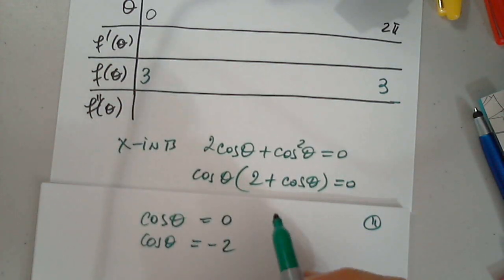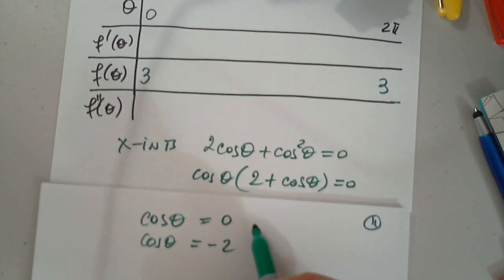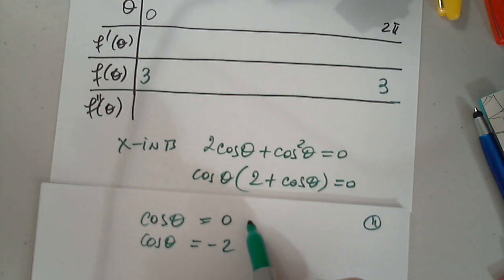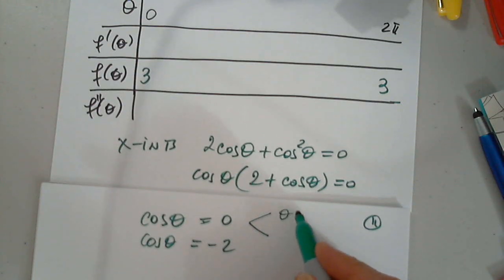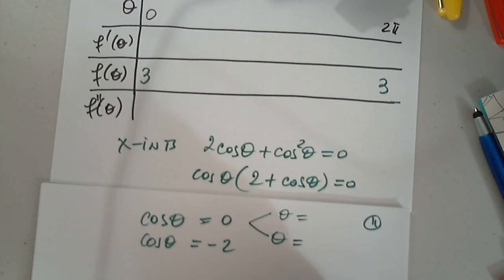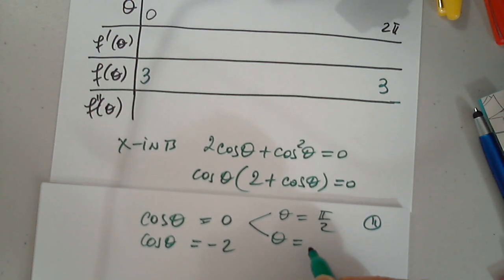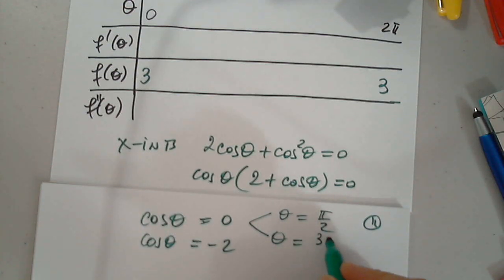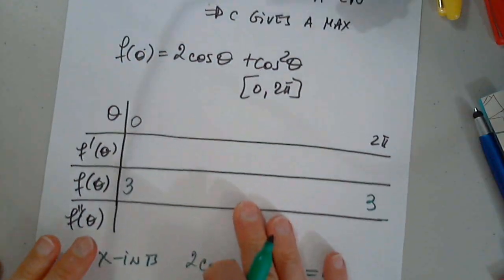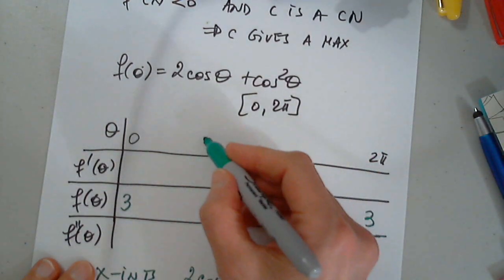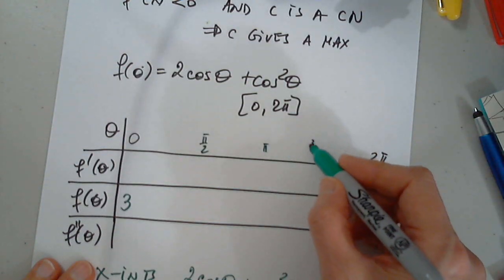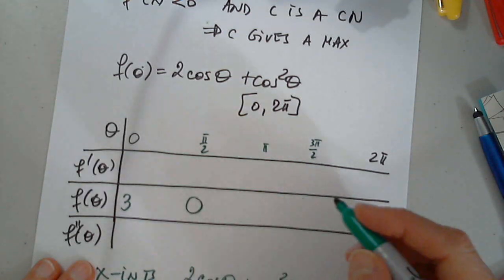So zero and negative two. Where is cosine zero? Pi over two. So make sure that I divide up into four quadrants: pi over two, pi, and three pi over two. You already told me zero here and zero here.